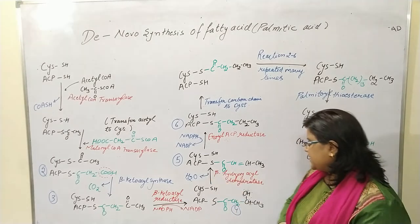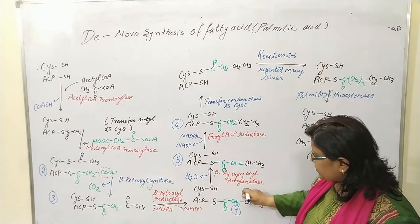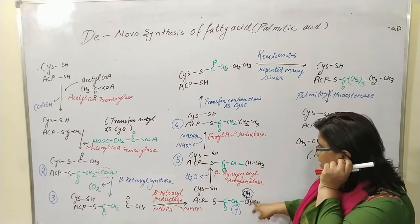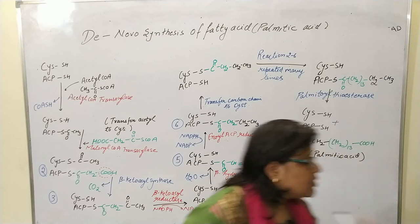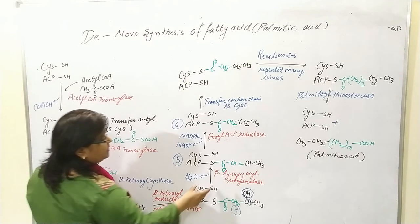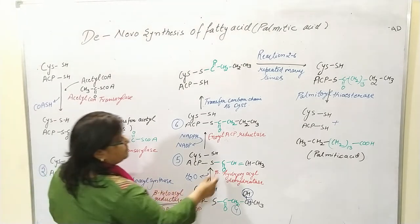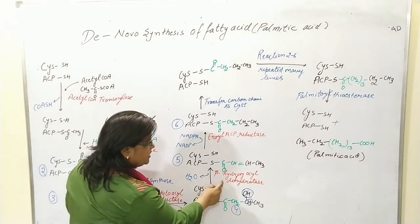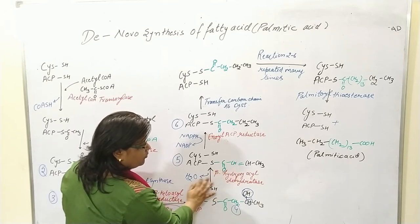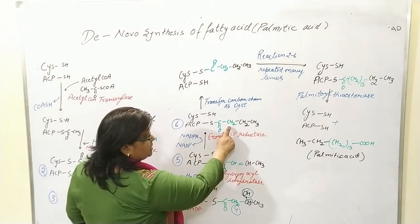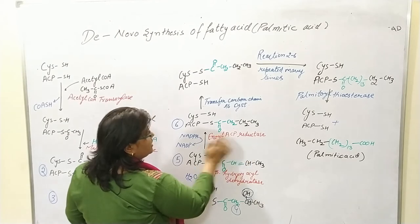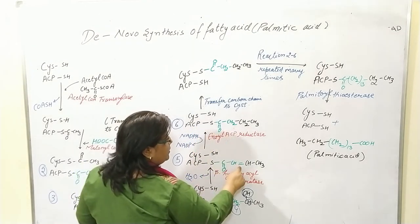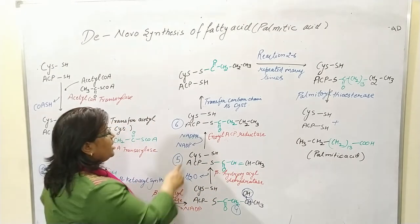In the fifth reaction, water is released: the OH group and a hydrogen on the adjacent carbon are removed by beta-hydroxyacyl dehydratase, forming a double bond. In the sixth reaction, this double bond is reduced to a CH₂ group by enoyl-acyl carrier protein reductase (working on the ACP subunit). NADPH again donates the hydrogen and is converted to NADP⁺. The green-colored carbons come from malonyl-CoA and the adjacent two-carbon chain comes from acetyl-CoA.